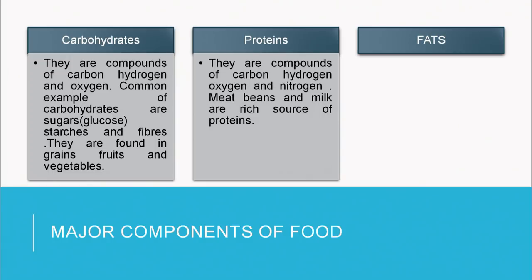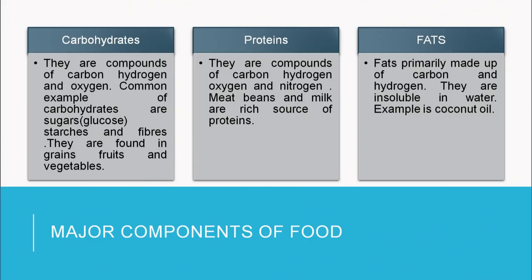The third is fats. Fats are made up of fatty acid and glycerol. They are organic compounds which are rich in carbon and hydrogen and have very little oxygen, and they are insoluble in water. Examples of fats are all the oils we consume for cooking, the most common being coconut oil. The basic components of any food are carbohydrates, fats and proteins.